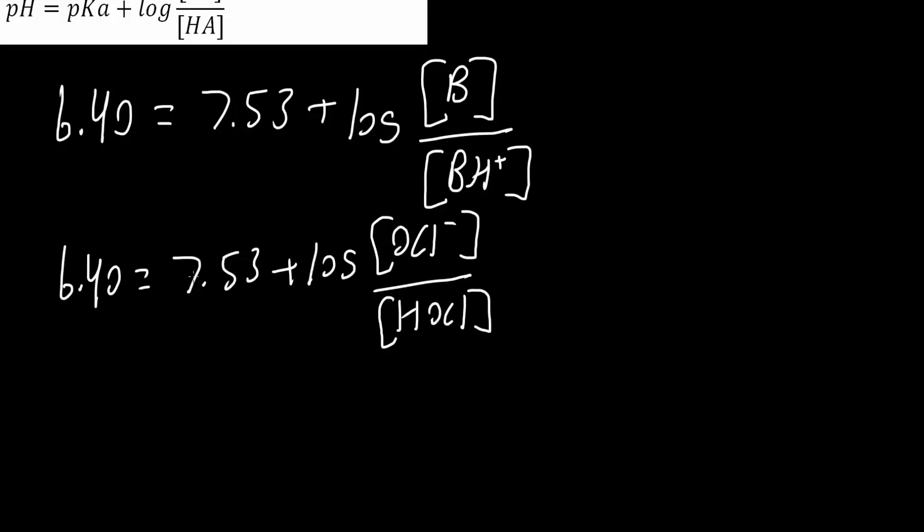From here, we can subtract 7.53, and we would get minus 1.13 is equal to log of this piece right here, so OCl minus divided by HOCl.